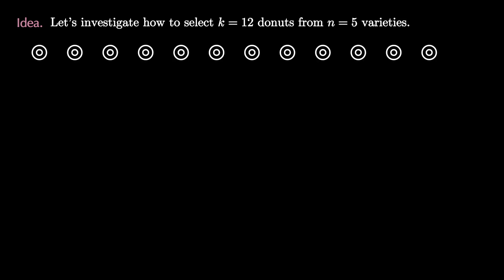So let's get the idea of how we can even go about finding the number of unordered selections from an n-set where repetition's allowed. Let's investigate this by thinking about how to select k equals 12 donuts from n equals five different varieties. Imagine we start with 12 plain donuts like this.